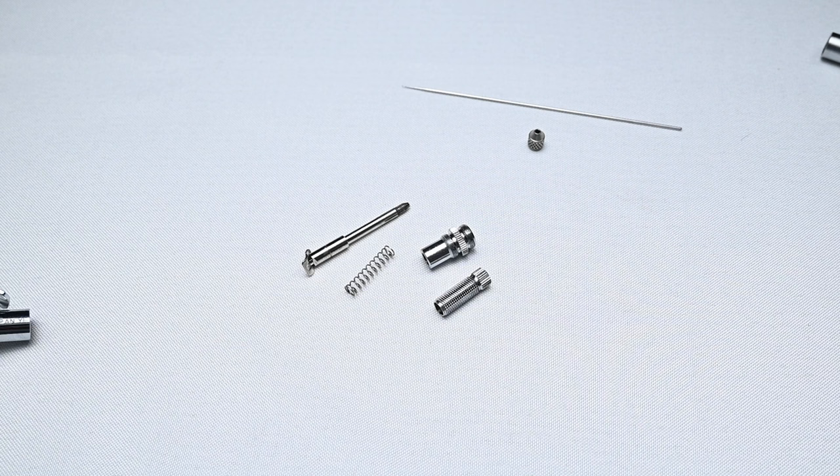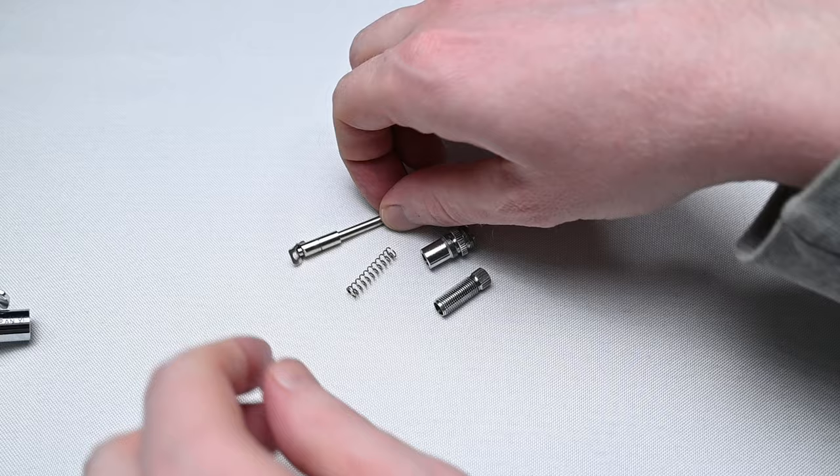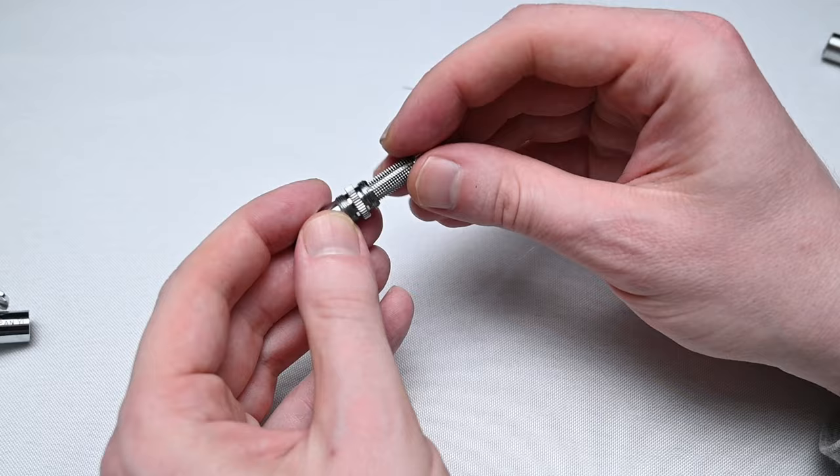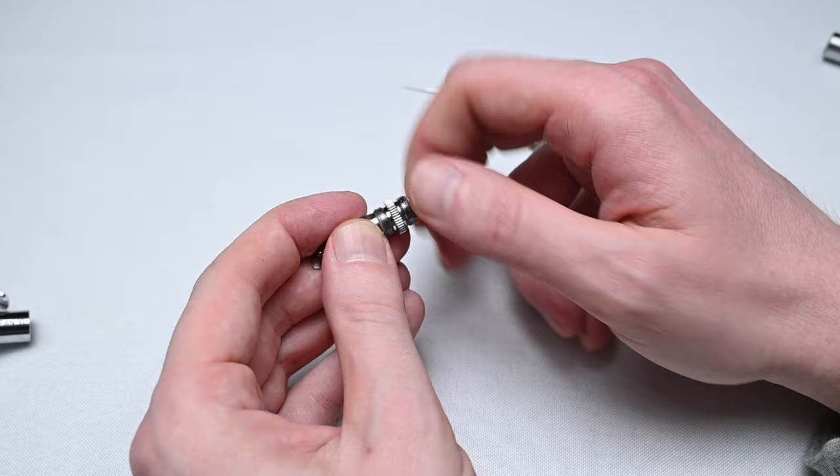To reassemble this, the first thing I'm doing is taking that needle chucking guide, and then taking the needle spring, placing it right over the back. Here, I could take that housing, which is called the spring guide, place it right over the top, and then I could take that needle adjustment screw and screw it within the back. And again, you don't have to tighten this down all the way like I do. That's just my preference. And then that's it for the back of the airbrush.